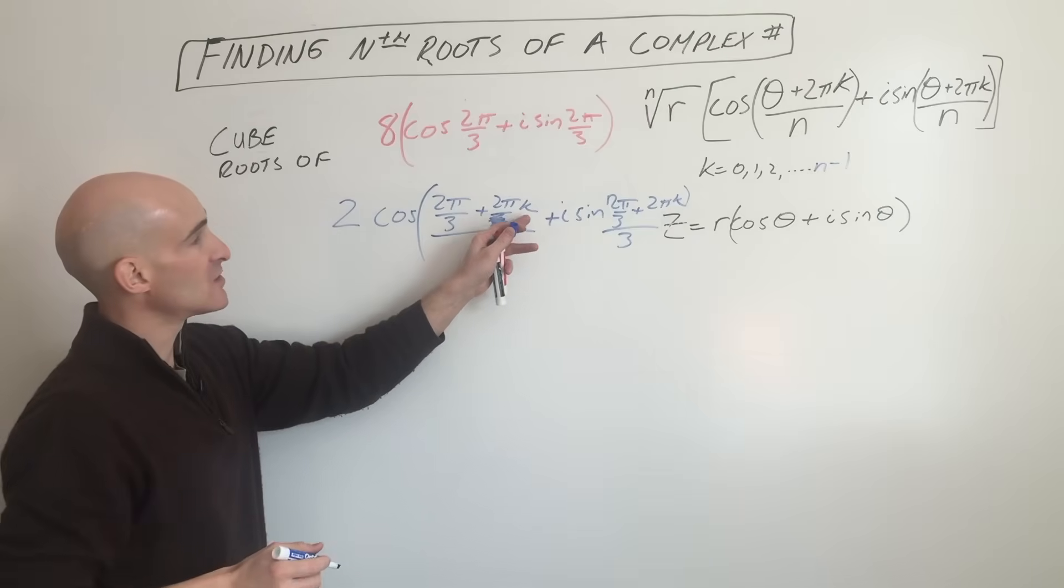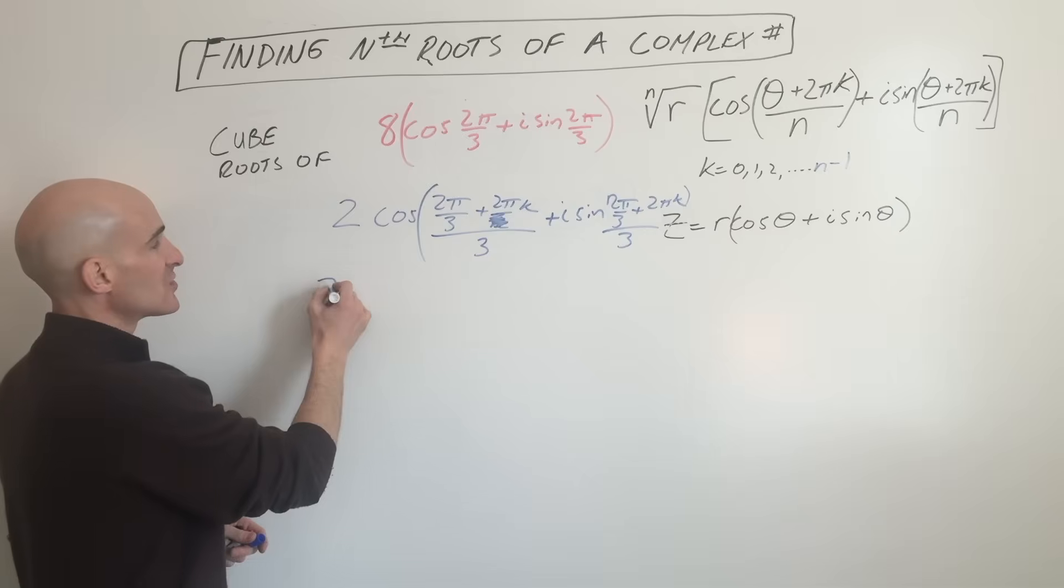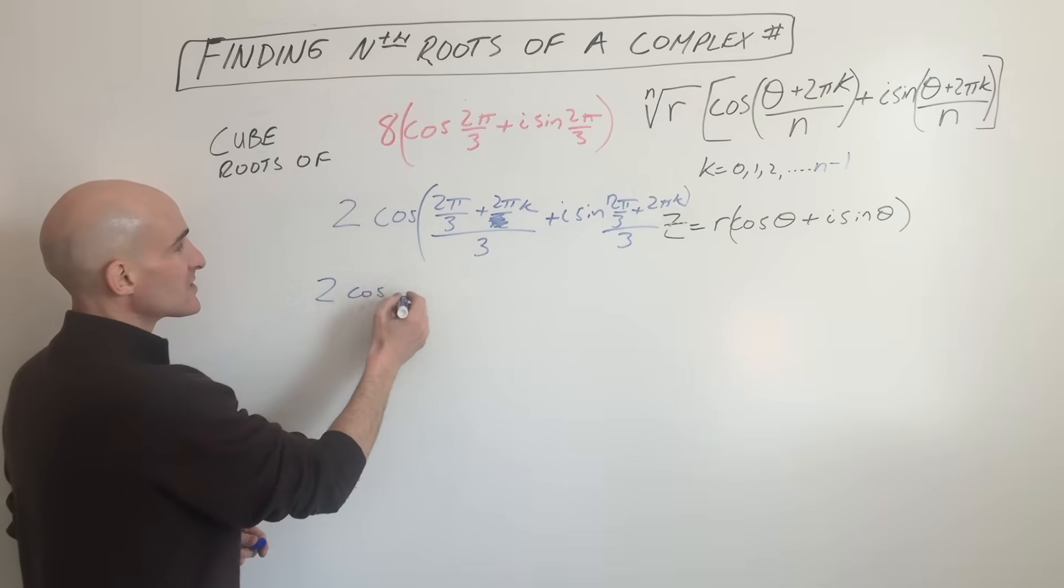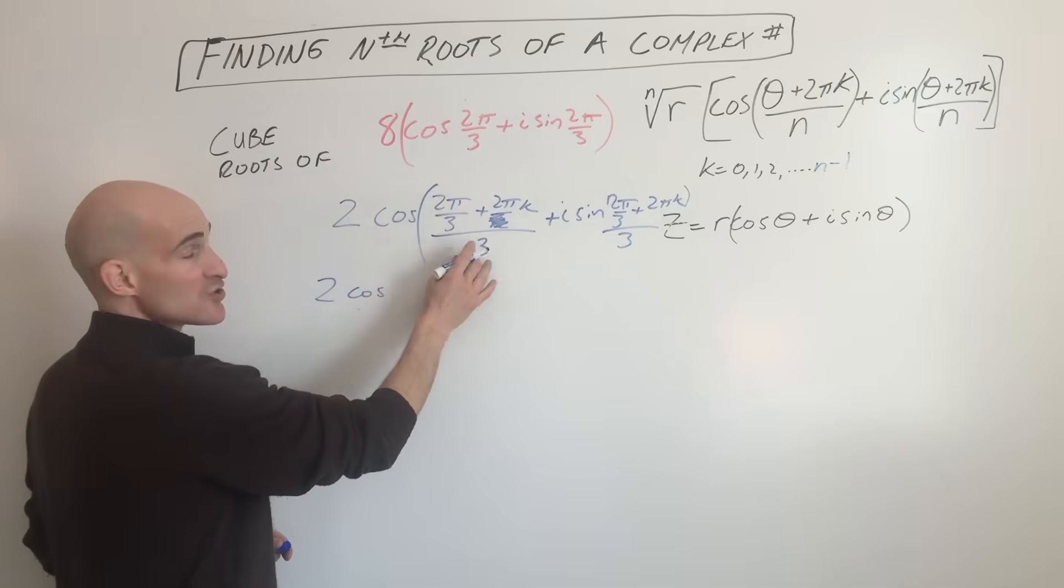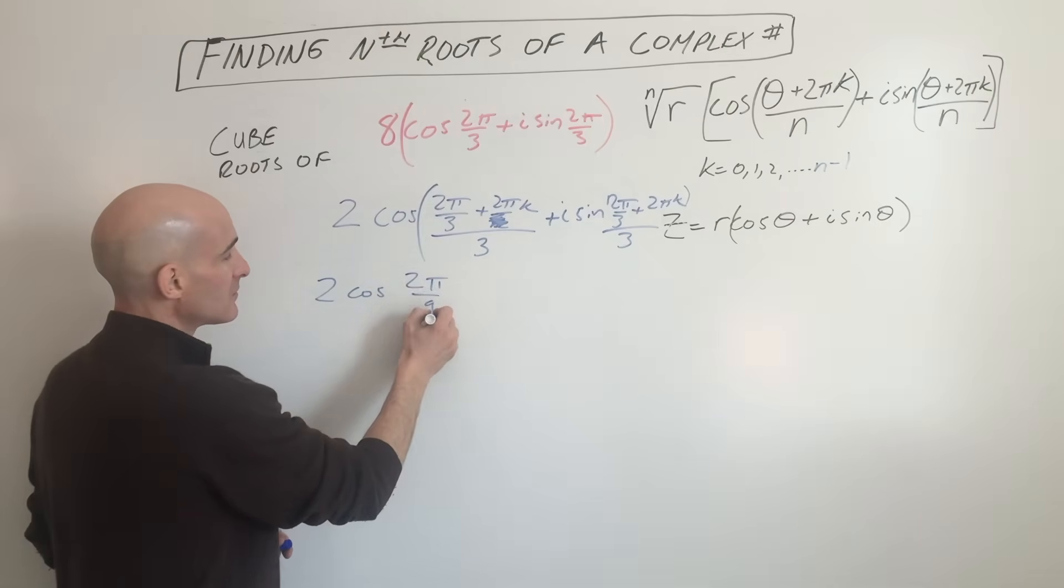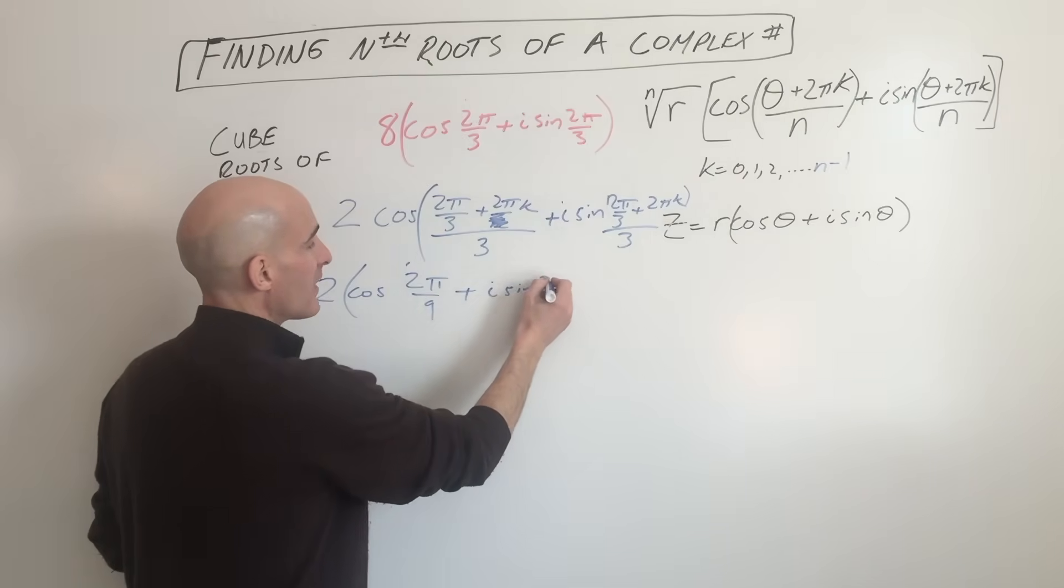So now all we have to do is substitute in k equals 0, 1, and 2. So we're going to get three answers. So our first answer is going to be 2 cosine. If k is 0, 0 times 2π is 0. So this is just going to be 2π/3, which is 2π/9, plus i sine 2π/9.